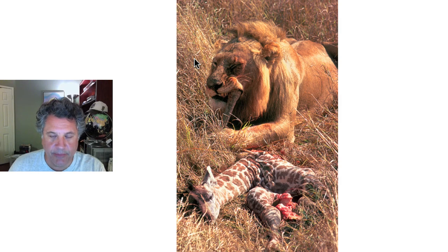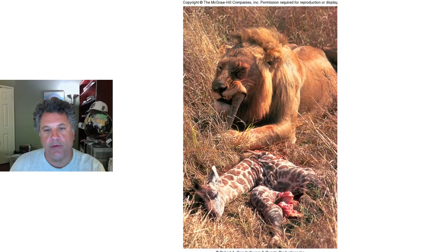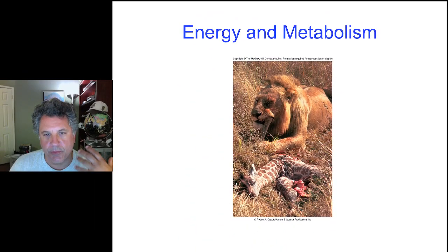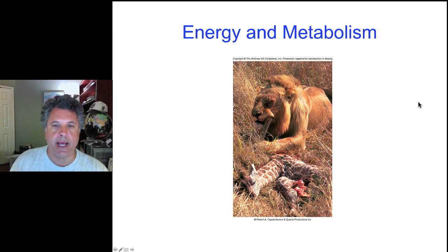Where does the grass get its energy? It gets it from the sun. So ultimately, all life on earth represents a flow of energy from the sun through the biological systems, through the biosphere, and we're going to study that now.